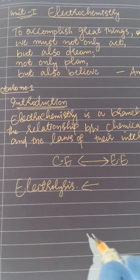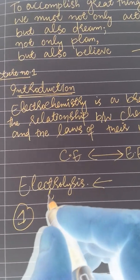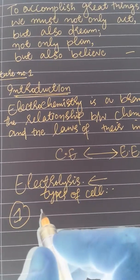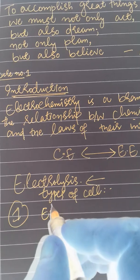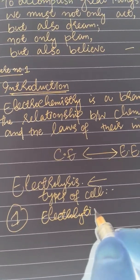Hence depending upon these two types of electrochemical processes, there are two types of cells. First is electrolytic cell.